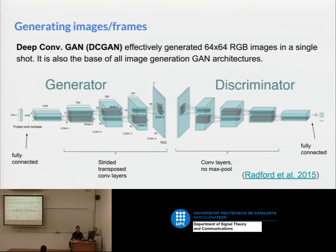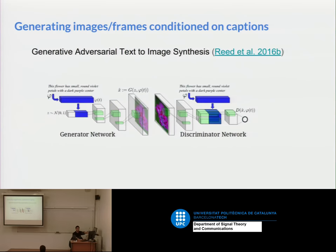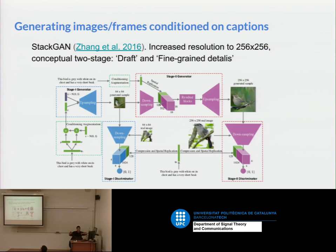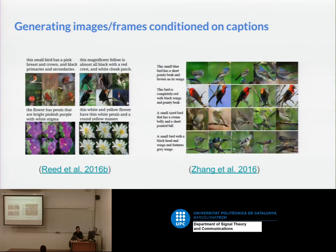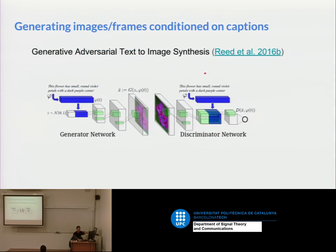They didn't have spectral normalization, two-timescale learning rates, or current techniques. People based many things on this architecture — making text-to-image generation; a Google DeepMind work is impressive. Another work that appeared the same year used two generators and two discriminators doing incremental tasks to reach higher resolution. Both went from text like 'this small blue bird has a short pointy beak and brown on its wings' to 64x64 or 128x128 images.